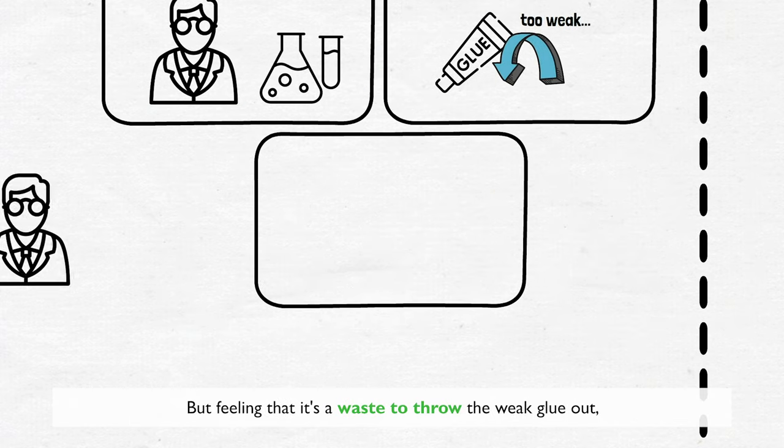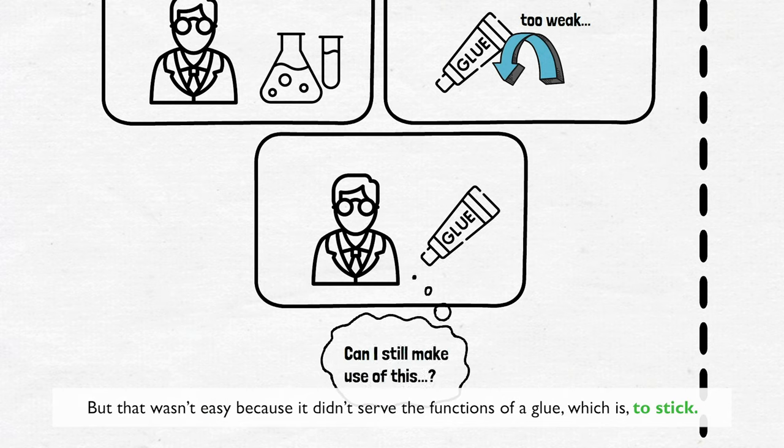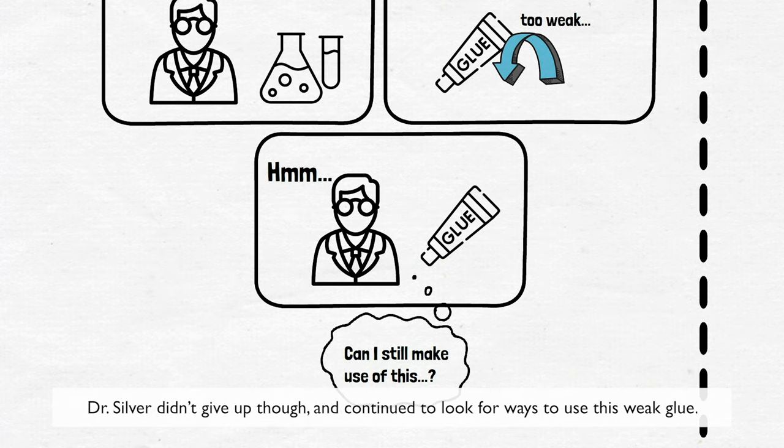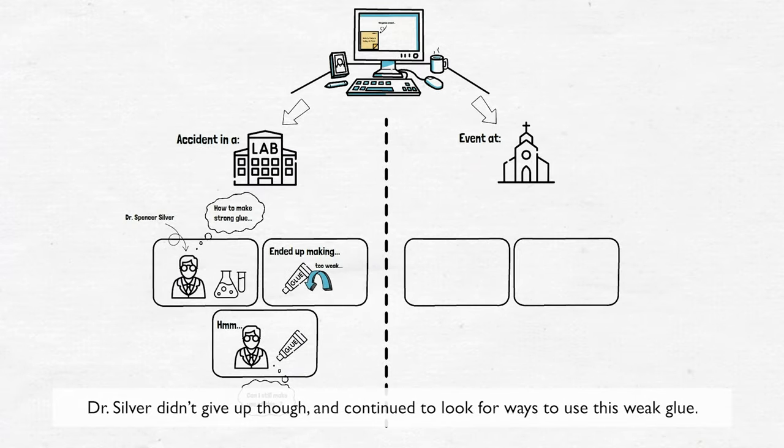But feeling that it's a waste to throw the weak glue out, he tried to look for ways to make use of this glue. But that wasn't easy because it didn't serve the functions of a glue, which is to stick. Dr. Silver didn't give up though and continued to look for ways to use this weak glue.